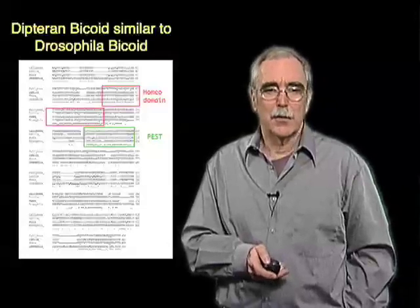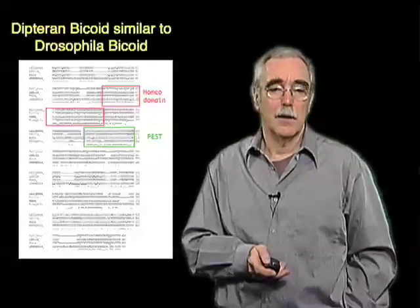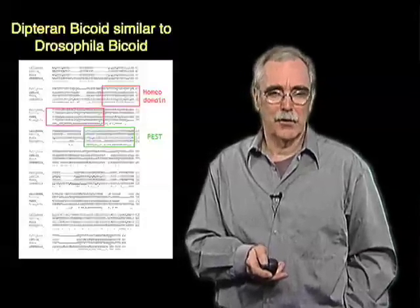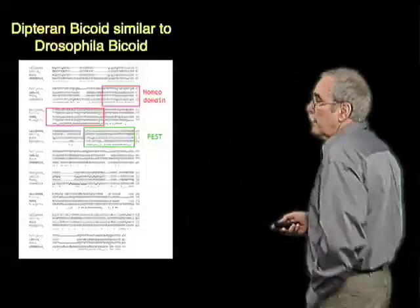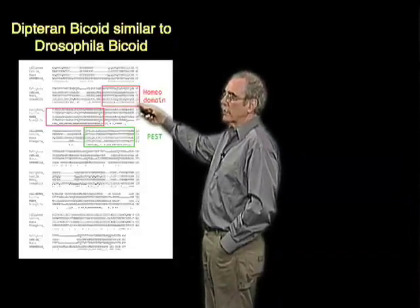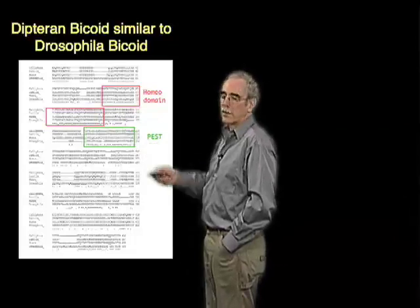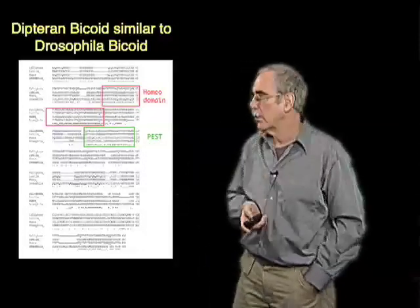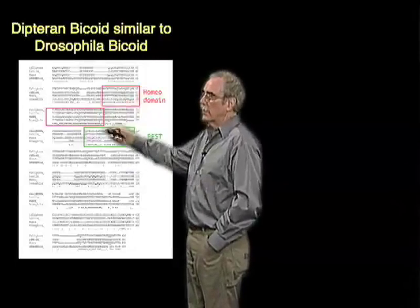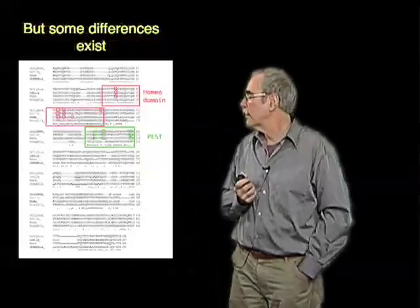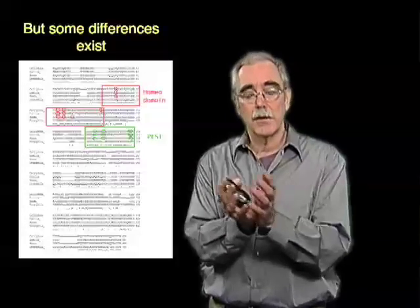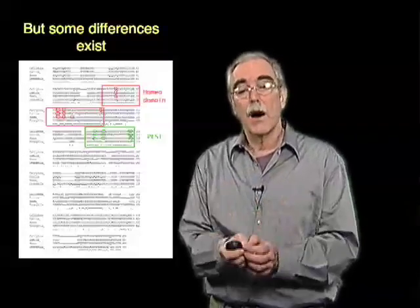To begin to test those models, we've cloned the bicoid genes from these different species and compared their structure to that of Drosophila melanogaster bicoid. Bicoid is reasonably well-conserved, particularly in regions of the protein with well-defined functions — the homeodomain that binds DNA, or other regions implicated in protein stability. Most of the sequences are the same, but not surprisingly, when you look at any particular region of these proteins, there are amino acid differences.